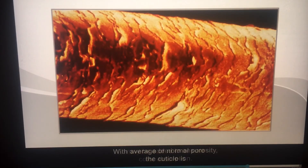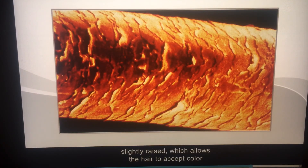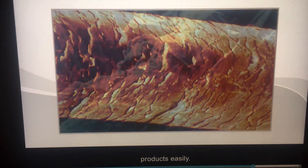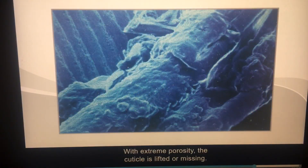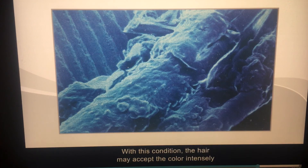With average or normal porosity, the cuticle is slightly raised, which allows the hair to accept color products easily. With extreme porosity, the cuticle is lifted or missing. With this condition, the hair may accept the color intensely, or it may fade quickly.